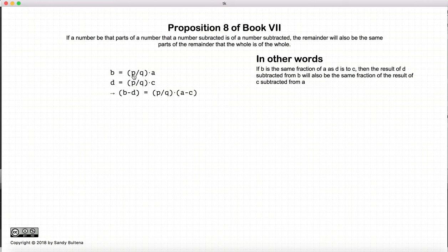I'm representing the fractions as p over q. Of course, this would be the simplest fraction. And this proposition states that if b is a fraction of a and d is a fraction of c, then if we subtract the two, the difference will be equal to the same fraction of a minus c.